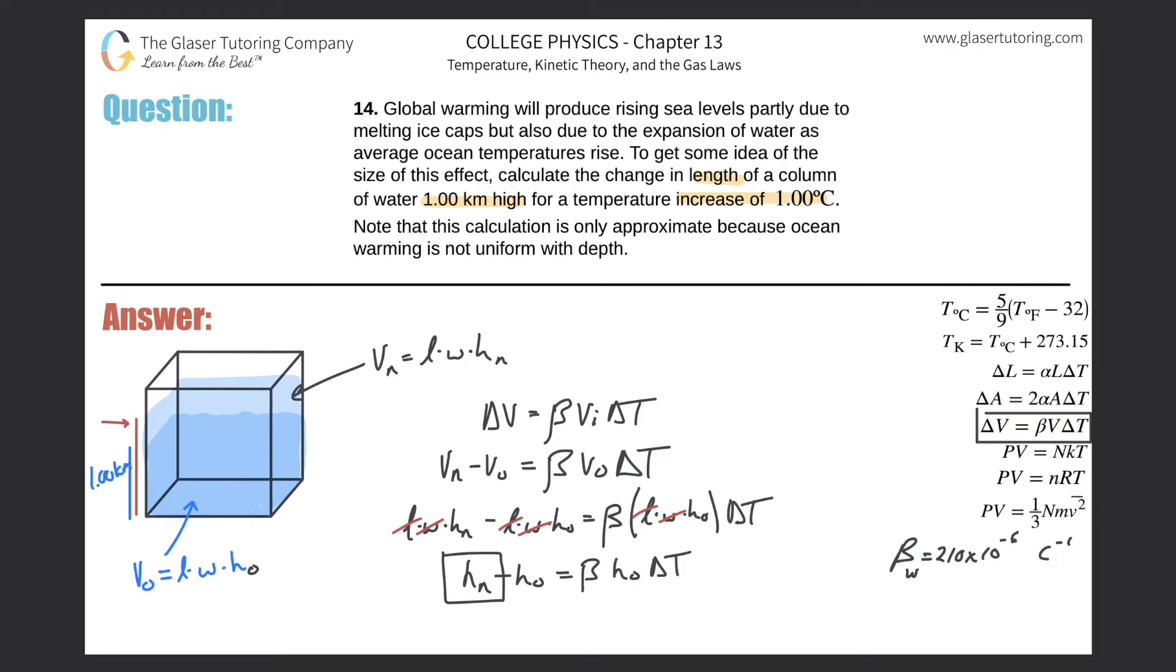Alright, solving for now the new height, that's what we're after, we can just bring this on over to the right hand side. And we realize now that the new height is the beta multiplied by the old height times the change in temperature plus the original height or the old height. And look, here it is. That's the formula.